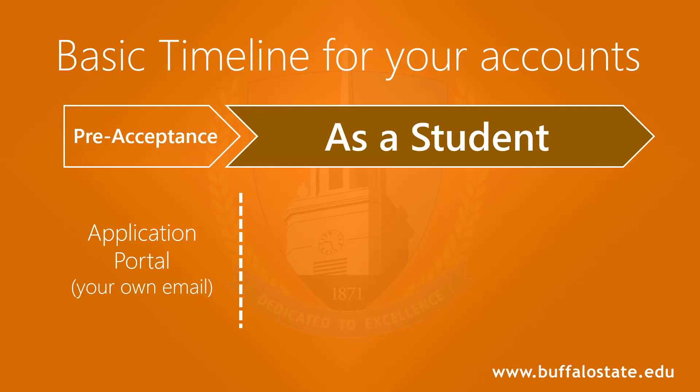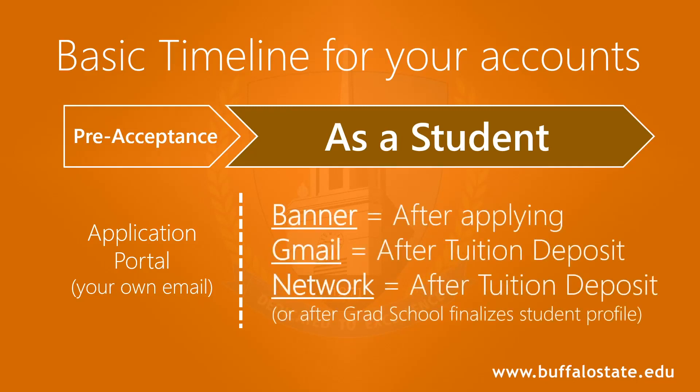As a student, you're given three different accounts: your Banner, your student Gmail, and your network account. Each of these has their own set of credentials to log in, and you're given access to them at different steps in your application process. Banner is given shortly after applying. After that, you'll get access to Gmail and your network account after your tuition deposit is either waived or paid as an undergrad, or after the grad school finalizes a student's profile once they are accepted.